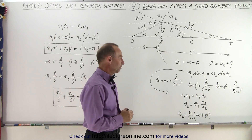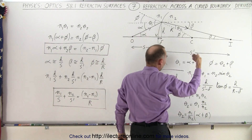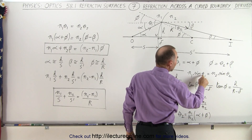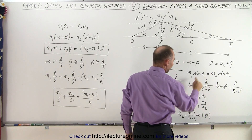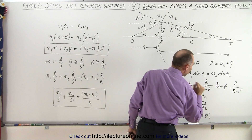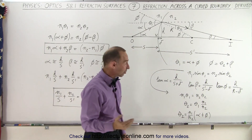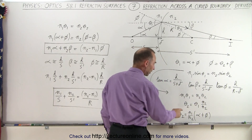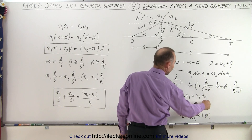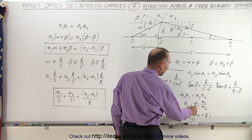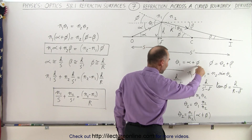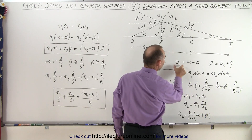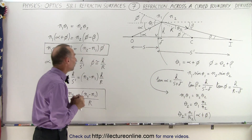Now we make the small-angle approximation: for very small angles, sine of theta is approximately equal to theta. So Snell's law becomes n1 times theta 1 equals n2 times theta 2. Solving for theta sub 2 gives n1 over n2 times alpha plus phi, since theta sub 1 equals alpha plus phi. Stay with me — we're almost there.